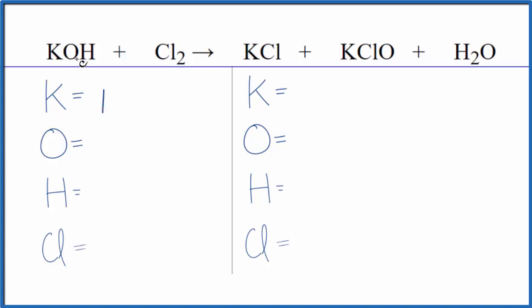We have one potassium, we have one oxygen, we have one hydrogen, and two chlorine atoms.